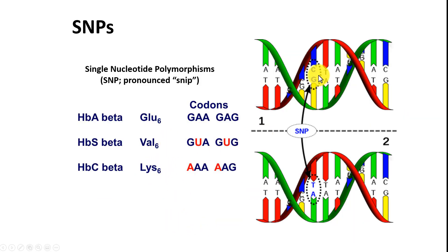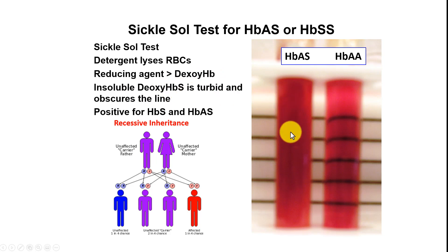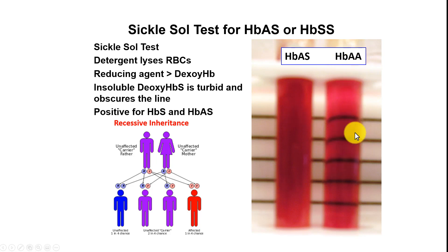Here are the SNPs again — single nucleotide polymorphisms in the DNA. There is a simple test to tell if someone might be a carrier or have sickle cell, called the sickle cell test. Detergent lyses the red blood cells, and a strong reducing agent converts all hemoglobin to deoxyhemoglobin. That deoxyhemoglobin becomes insoluble and turbid. Both the carrier and sickle cell hemoglobin appear dark and opaque, whereas normal HBA remains soluble when deoxy, and you can see lines through it. This is a very simple test.